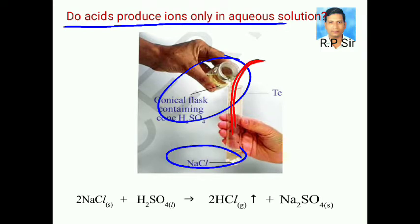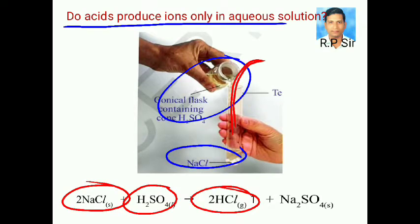Let us write the chemical equation for the above reaction. Sodium chloride plus sulfuric acid gives rise to HCl gas and sodium sulfate.